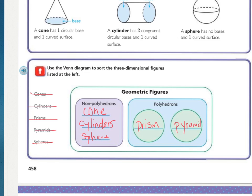This Venn diagram lets us know that if something is a prism, it's also considered a polyhedron. And if it is a pyramid, it is also considered a polyhedron.